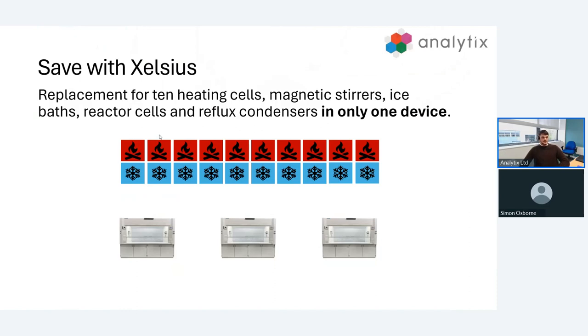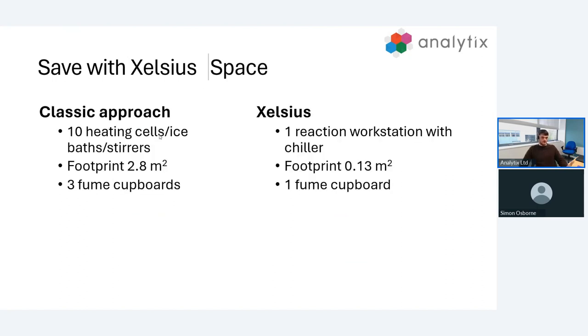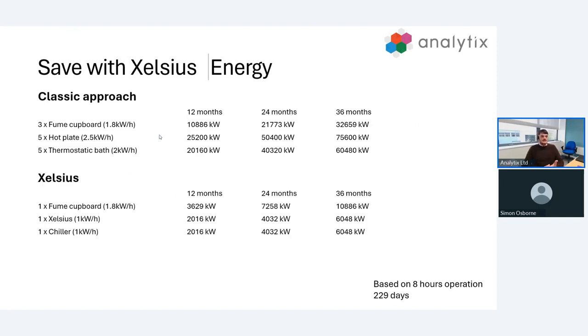The idea of saving with Excelsis is that we're using one module to replace 10 heating cells, magnetic stirrers, ice baths, and reflux condensers. This saves not only in space but in energy and carbon output. With space, a classic approach with just 10 heating cells and ice baths and stirrers, where you could only keep five different temperatures and cool to five different temperatures, we'd need at least three fume cupboards. With Excelsis, we're doing all of this and more in a much more compact system. We could use one fume cupboard and still have plenty more space to have other things in there.